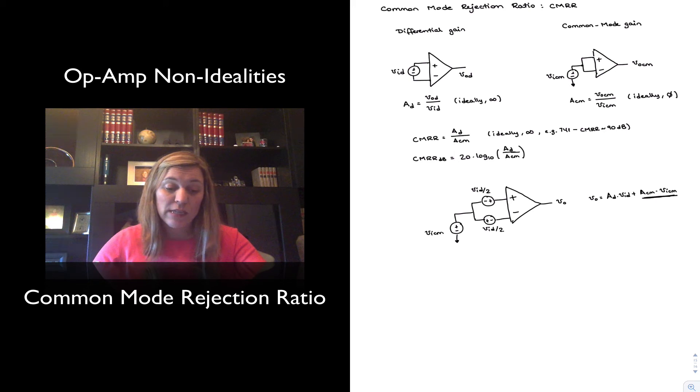If we wanted to represent the common mode rejection ratio of an amplifier, we can do so by using a model. It's a similar model to the one that we use for the DC offsets, since again, the effect of the finite CMRR is going to be an offset at the output of the amplifier with respect to the ideal value or nominal value that we were expecting.